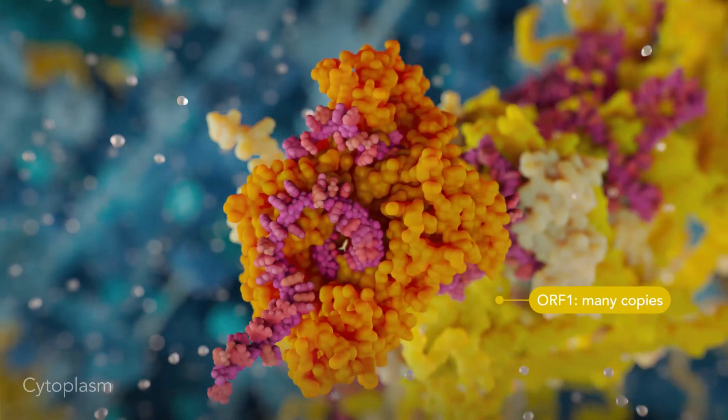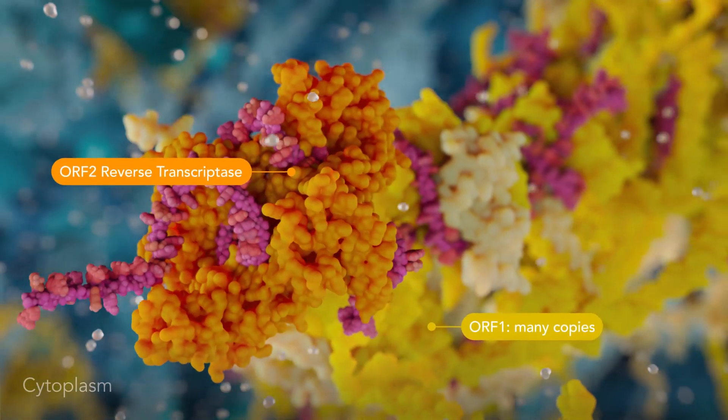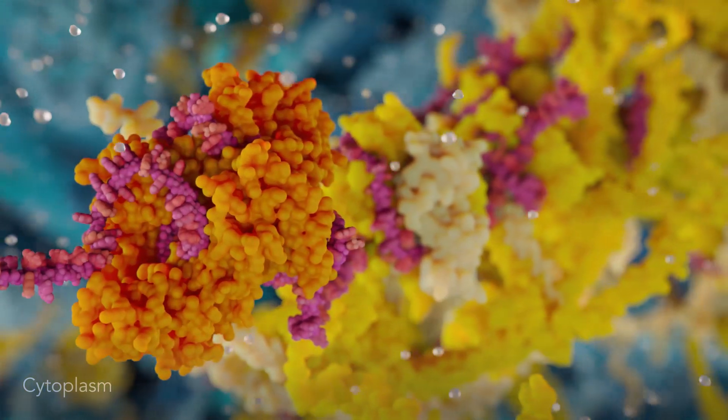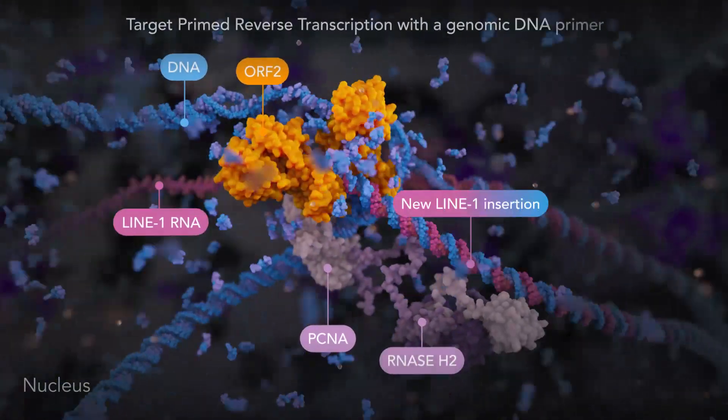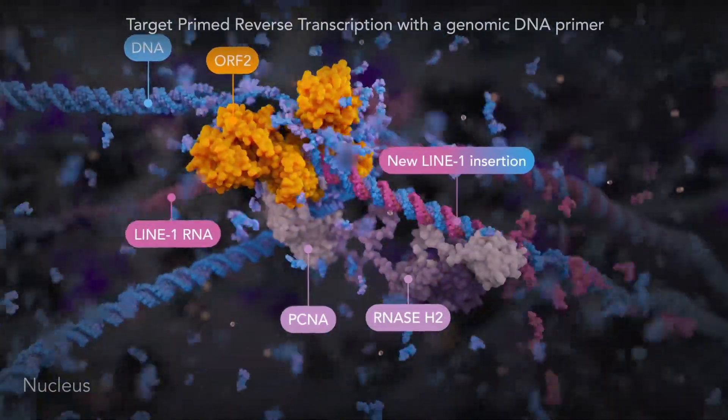These RNA molecules encode proteins that can transfer LINE-1 RNA back to the nucleus, where through reverse transcription they can create and insert a new LINE-1 DNA copy into the genome, causing mutations.